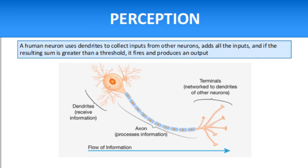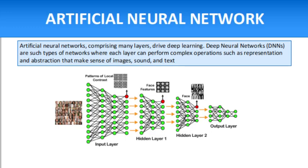For an artificial neural network comprising many layers, deep neural networks (DNNs) are such types of networks where each layer can perform complex operations such as representation and abstraction that make sense of images, sound, and text. Deep learning is considered a fast-growing field in machine learning and represents a truly disruptive digital technology, being used by increasingly more companies to create new business models.